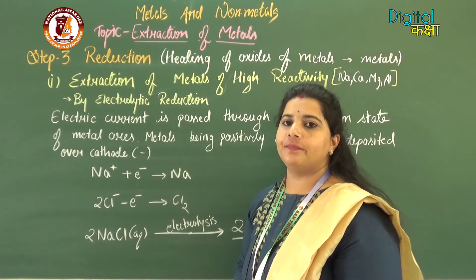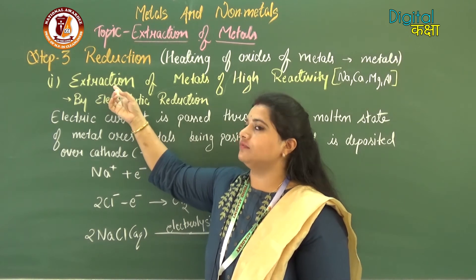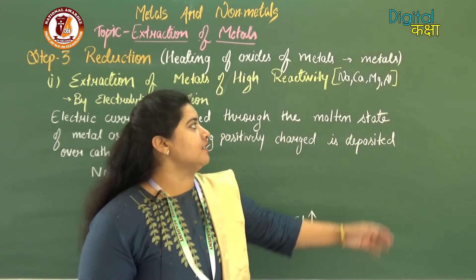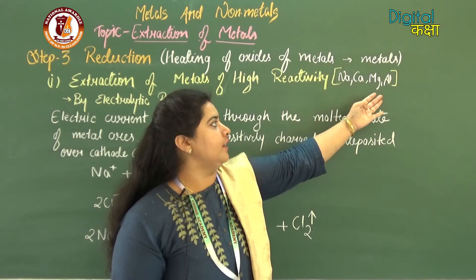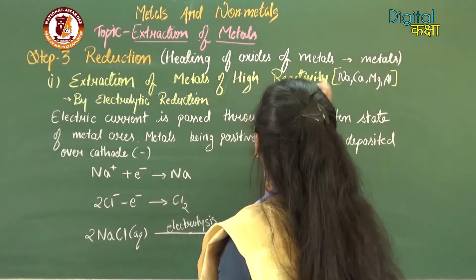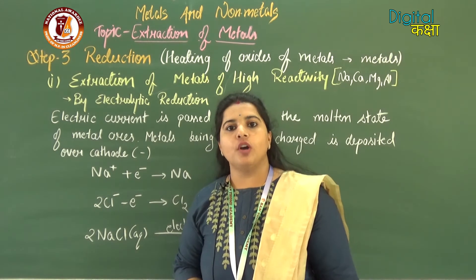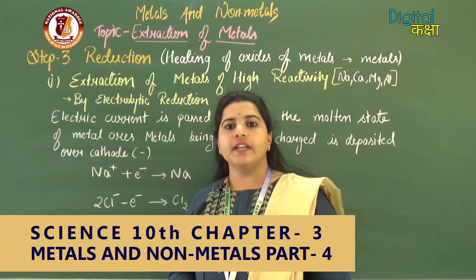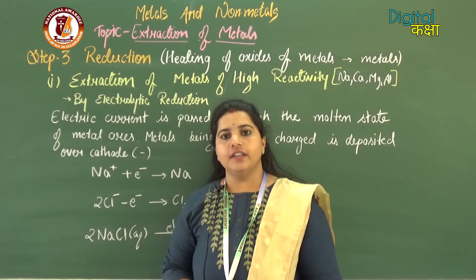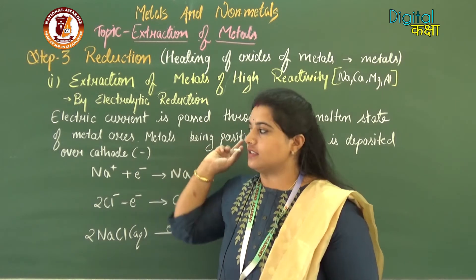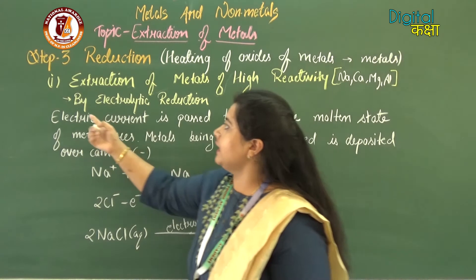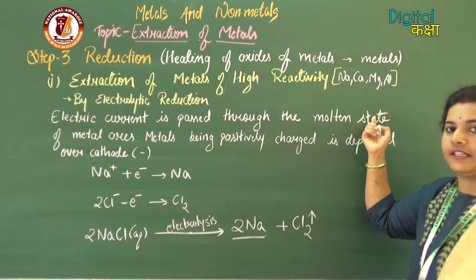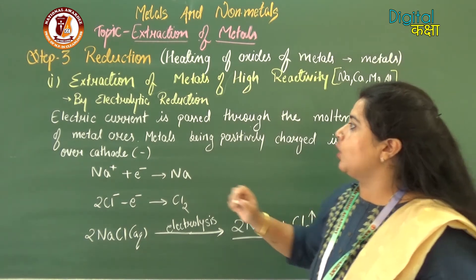After reduction of middle reactive elements, we extract metals of high reactivity. In the reactivity series, highly reactive elements are sodium, calcium, magnesium, and aluminium. These elements usually exist as oxides or salts. If they exist as oxides, carbon or aluminium reduction can yield the pure metal. However, if they exist as salts, electrolytic reduction is used — electric current is passed through the molten form of the metal salt.